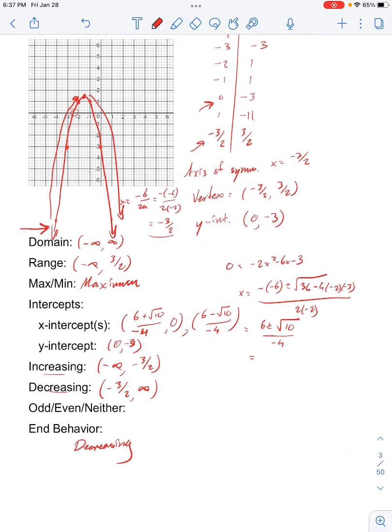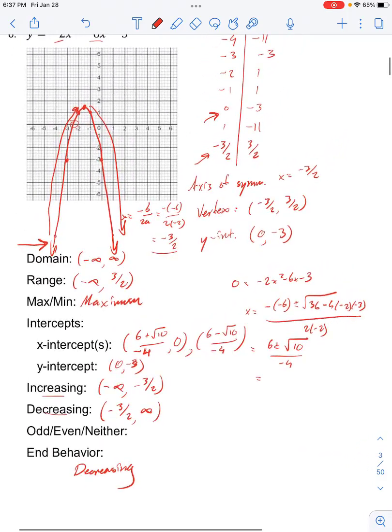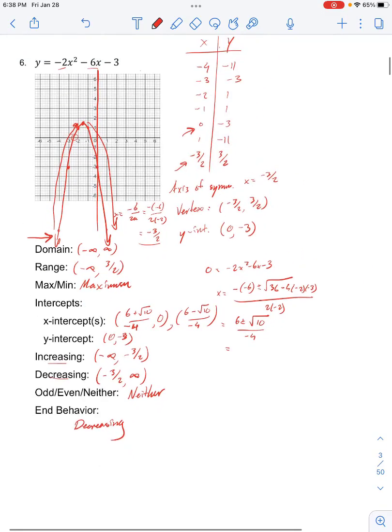And then we have odd, even, or neither. So that is referring to the symmetry of the function. So if it was even, it would be perfectly symmetrical over the y-axis, which it is not. Because if we reflect the function across the y, we would get a different looking image. And it is not an odd function. Because if we rotate it by 180 degrees, this function, we would have to redraw somewhere over here. So we have neither for this. And we already said our end behavior is decreasing both on the left and right.